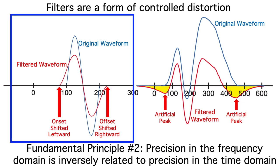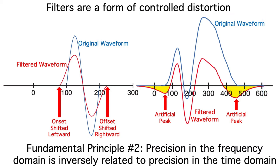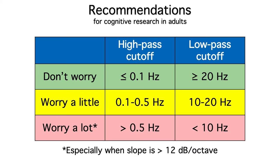Low-pass filters tend to distort the onset and offset time of the ERPs. Extreme high-pass filters can cause artificial peaks to appear in the waveforms. But some filtering is necessary. Here are my concrete guidelines for when you should and shouldn't worry about the filter settings in an ERP paper.